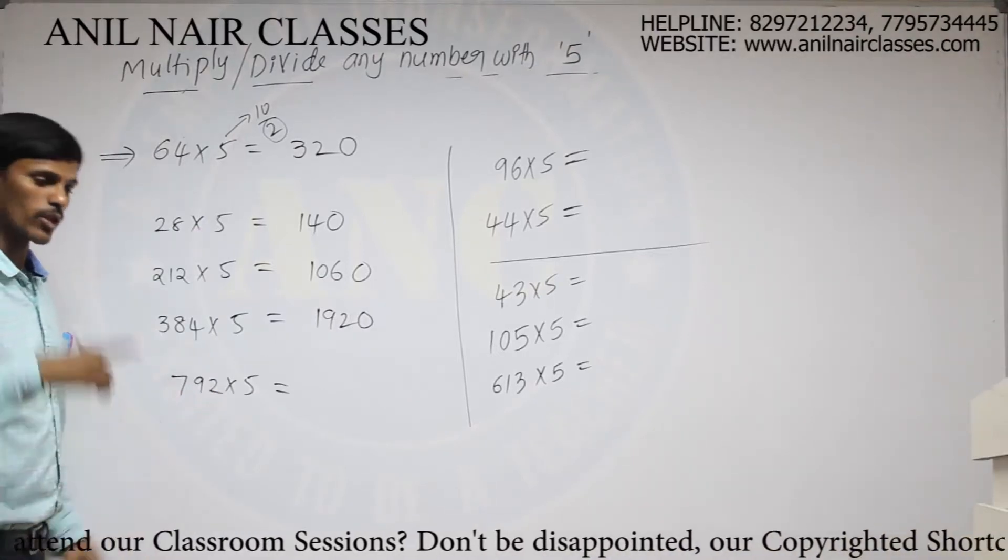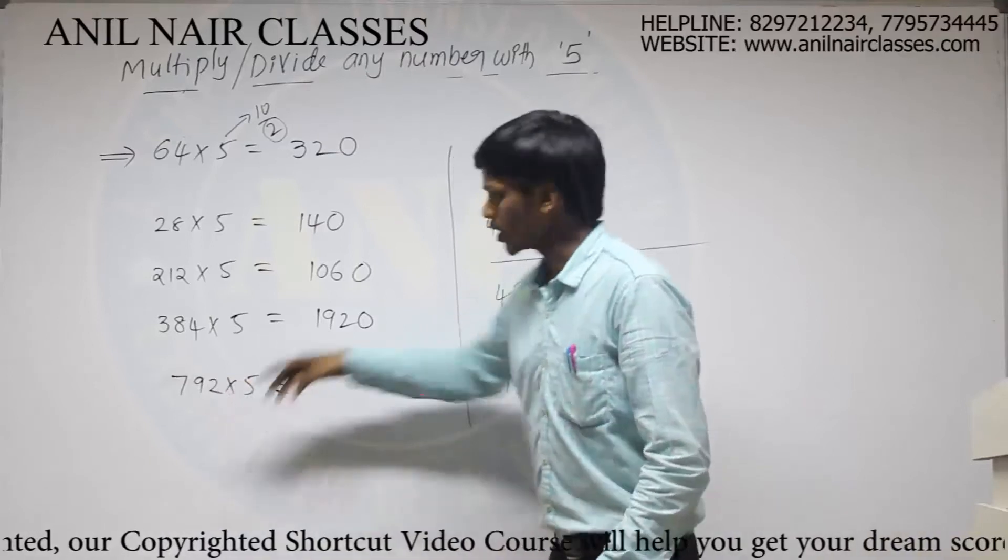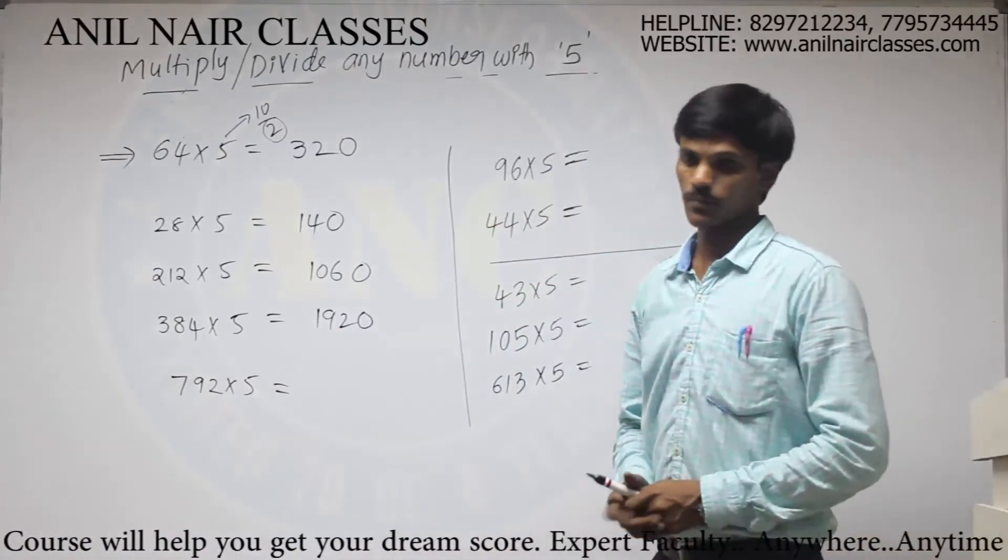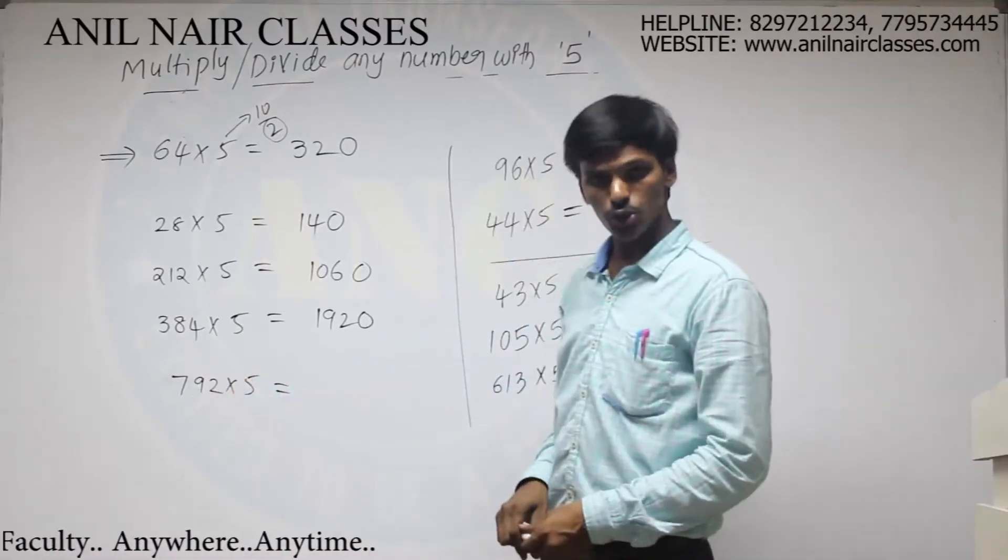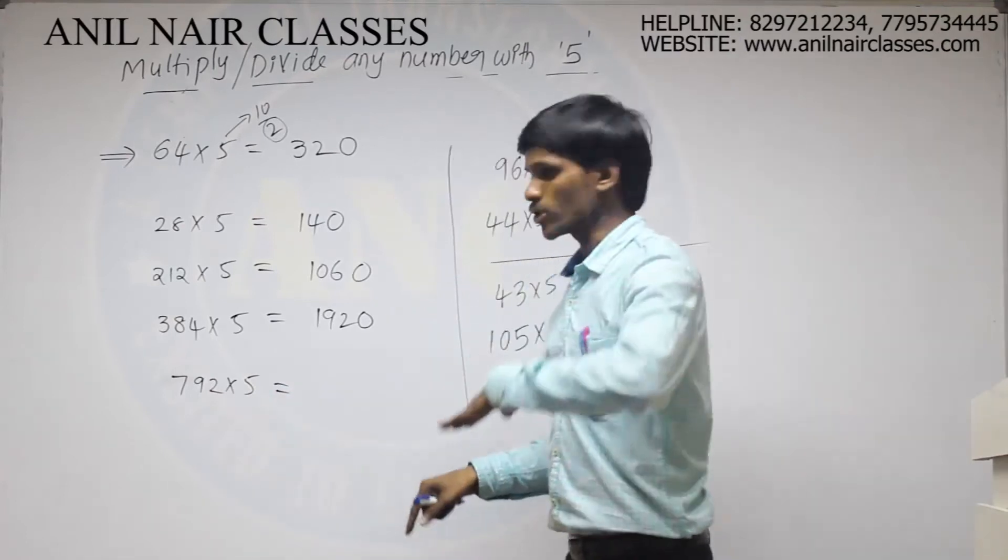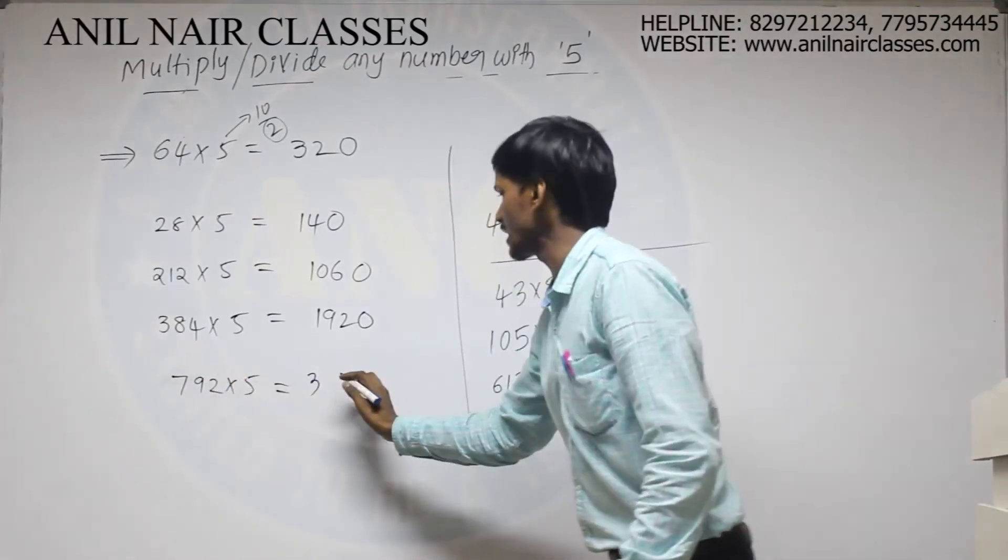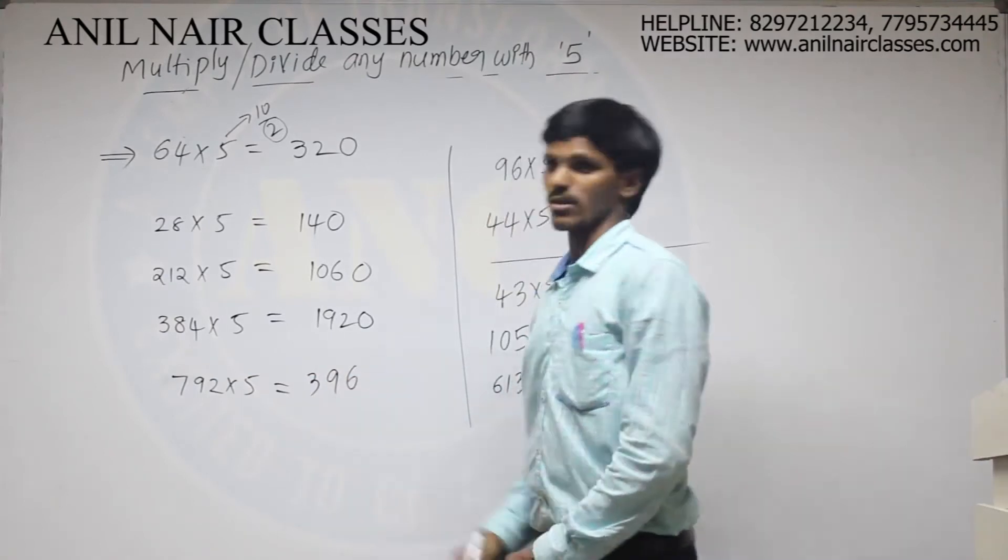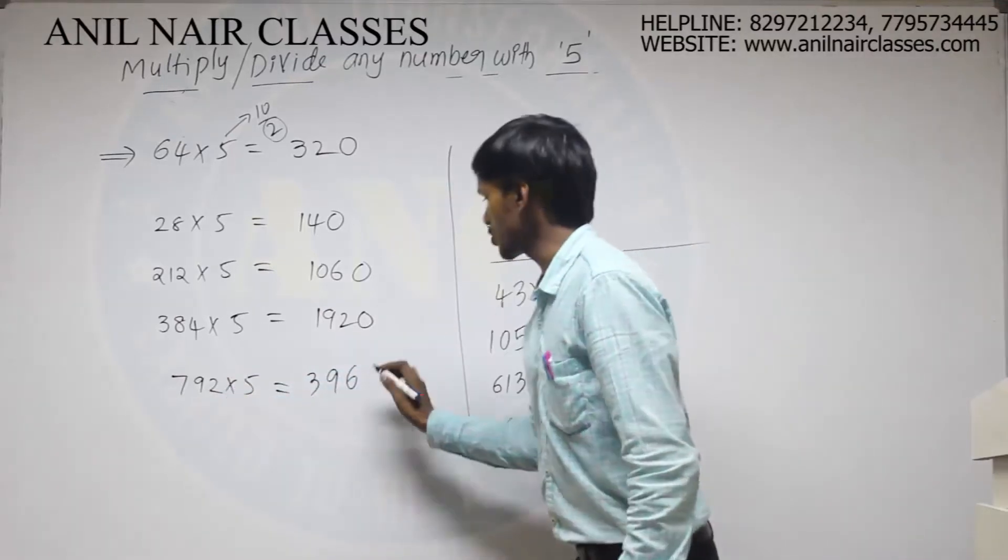792. If you are not able to guess the half of the value of any given number, you can individually divide that number with 2 also. Now, for suppose you don't know how to guess the direct half of the value of 792. Then what to do? 792 by 2. So 2 threes are 6. Remainder will be 19. 2 nines are, 2 sixes are.